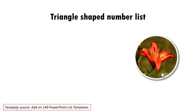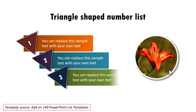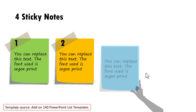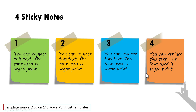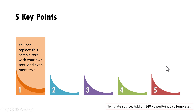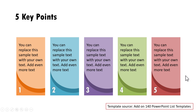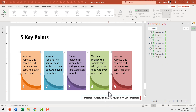Another example shows a triangle-shaped number list — click to show the first point, then second, third, and fourth. Another is four sticky notes shown one by one. The final example shows five key points revealed on click: first, second, third, fourth, and fifth. There are 140 such interesting PowerPoint list animation templates available in the addon 140 PowerPoint list templates collection.